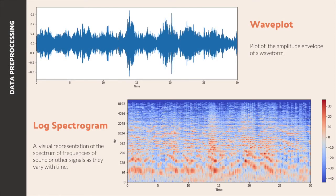A waveplot is a plot of the amplitude envelope of a waveform, which lets us know the loudness of the audio at a given time. However, from a waveplot we cannot gain much information. A spectrogram is a visual representation of the frequency content of an audio. Different music genres present distinct patterns in a spectrogram. Hence, we transfer audio to image and tackle the genre classification problem as a parallel problem to image classification.